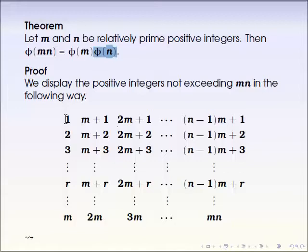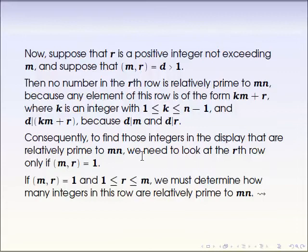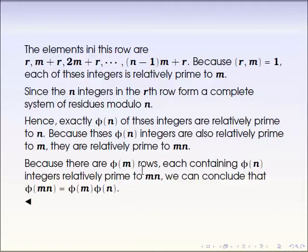So all together, there are only phi of m rows survived in here, and phi of n columns survived. And any survived integer by that is going to be relatively prime with m times n. So all together, there are this many integers. It's going to be relatively prime with m times n. And that's going to be the proof of this whole theorem. So please try to read and follow the arguments.